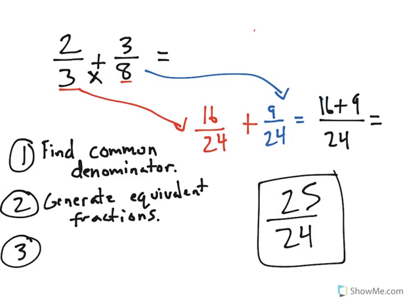And then once you have the equivalent fractions, you need to add the equivalent fractions together. That is the three step process to adding two fractions when you have unlike denominators.